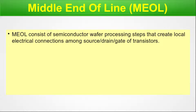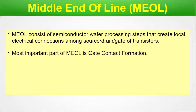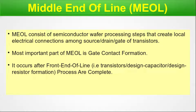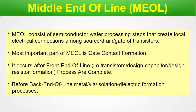Middle end of line, MEOL. MEOL consists of semiconductor wafer process steps that create local electrical connections among the source, drain, and gate of transistors. The most important part of MEOL is the gate contact formation. It occurs after front end of line — that is, after transistor and capacitor formation — and before the back end of line metal, via, or isolation dielectric formation process. It's in the middle, as you can understand by its name.